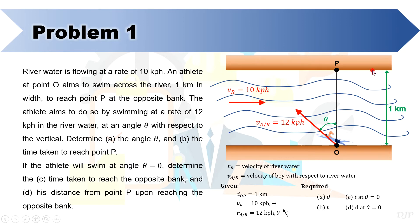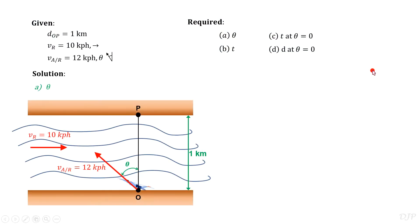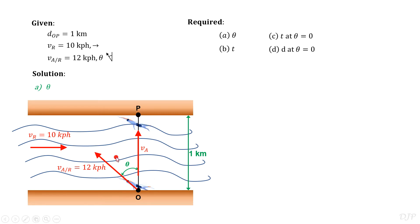Let's start now with the first question: the value of theta. Using the same figure, we should draw the velocity vector of the athlete along line OP and denote this as V sub A. This velocity is considered as absolute velocity because with respect to the Earth or the inertial frame of reference, the athlete is moving straight from one side to the other. This means that if an observer is standing on either side of the river, he can just perceive the motion of the athlete as straight from point O to point P, although with respect to the river the athlete is swimming at angle theta. From this figure, we can now see the absolute velocities V sub R and V sub A, which are all based on inertial frame of reference.